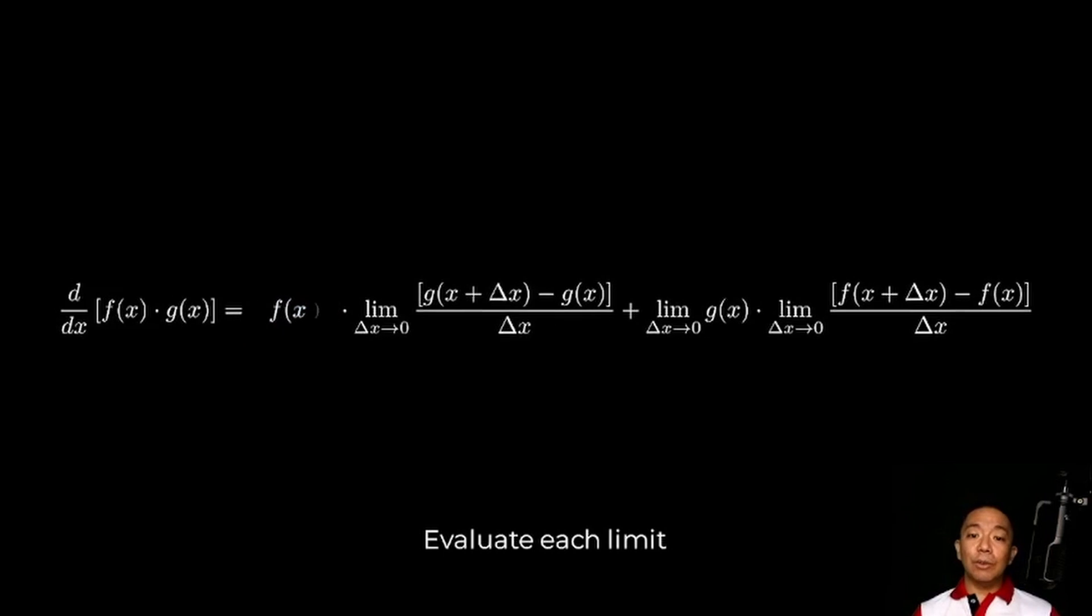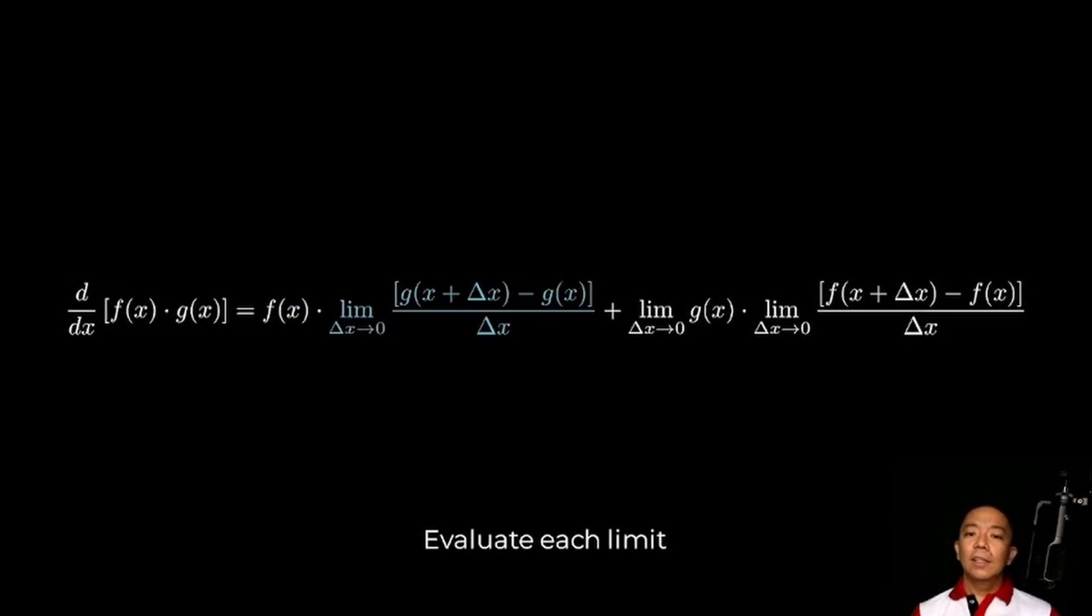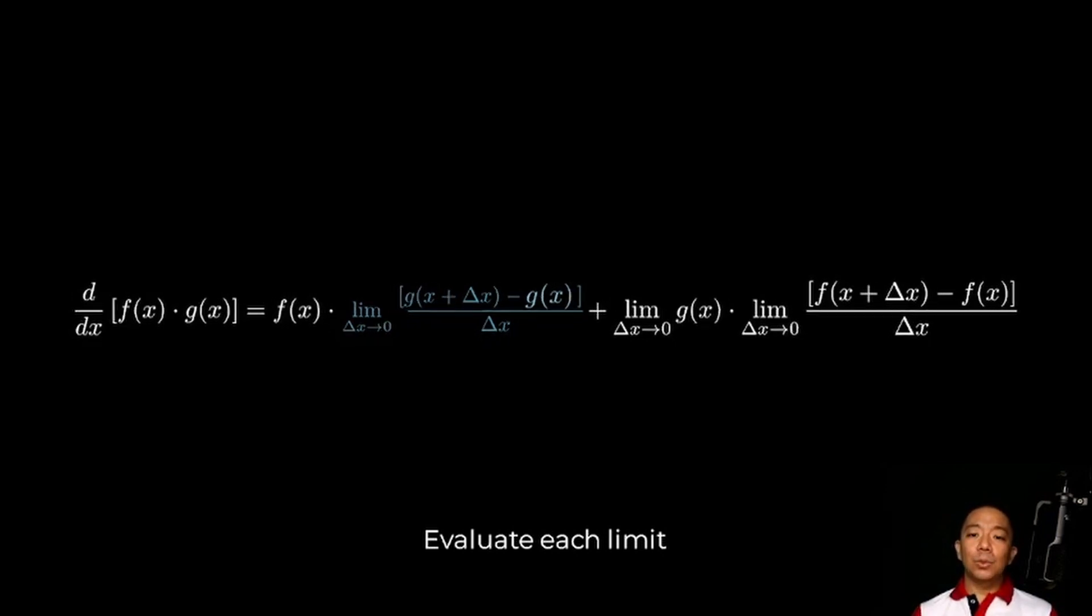Now the second expression na-evaluate natin yung limit. This is the limit as delta x approaches zero of g of x plus delta x minus g of x all over delta x. This is the definition of the derivative of g of x. So this simplifies to g prime of x.